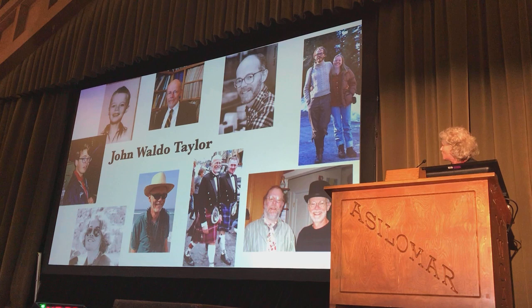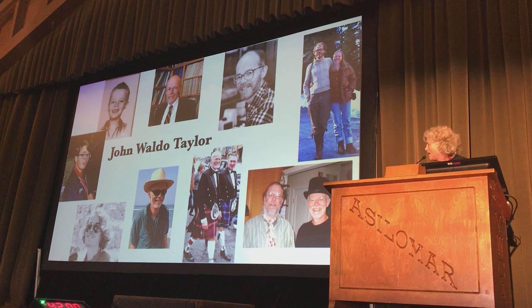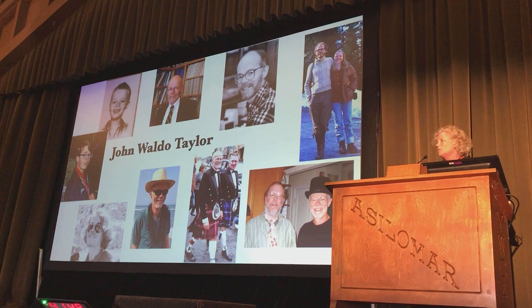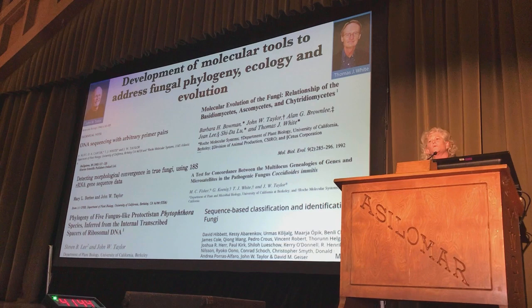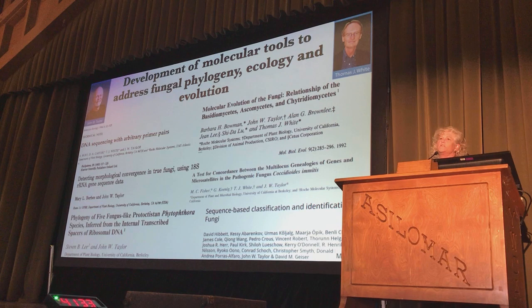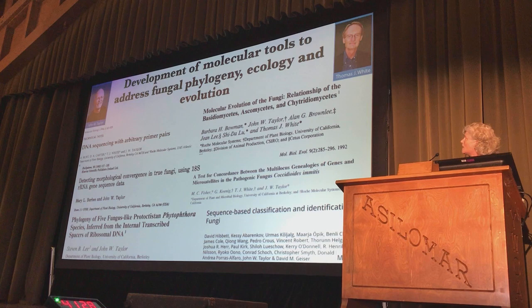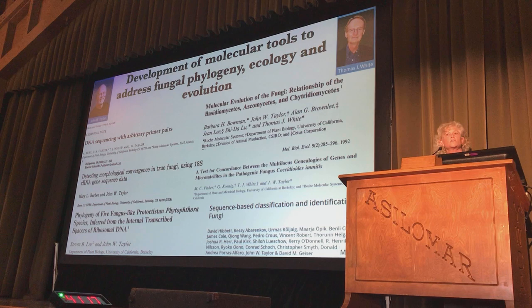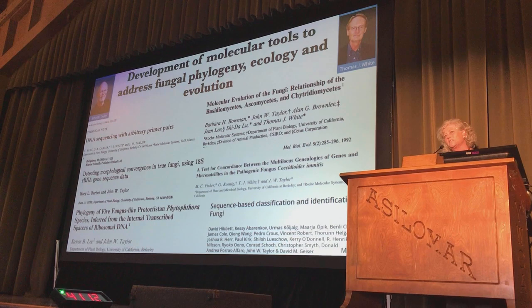John, as I told you, did a lot of morphology for his graduate and post-doc work. But when he came to Berkeley, he developed a friendship with Tom White. This has really been a changing aspect of fungal biology, because Tom White was involved in Cetus and Roche, where he developed PCR. And John talked him into using that technology to understand fungal phylogeny, ecology, and evolution. These are just some very important papers from all that work, where John, in collaboration with Tom, used DNA to ask questions about fungal biology.